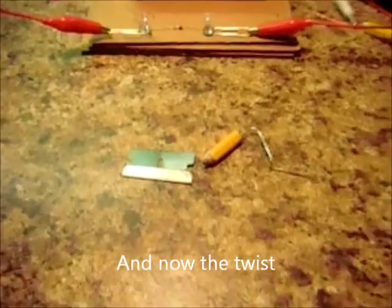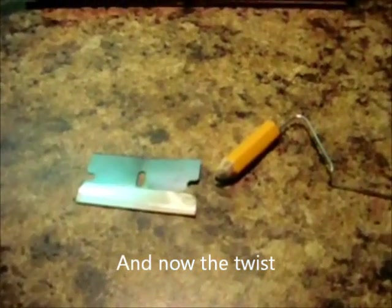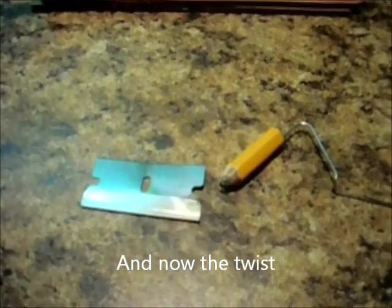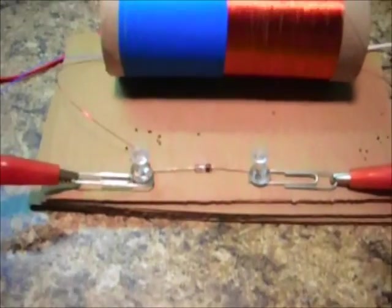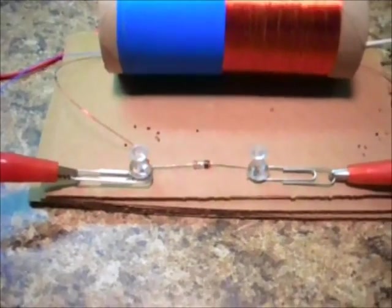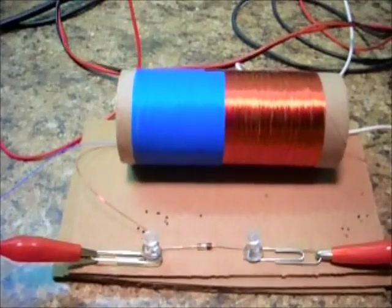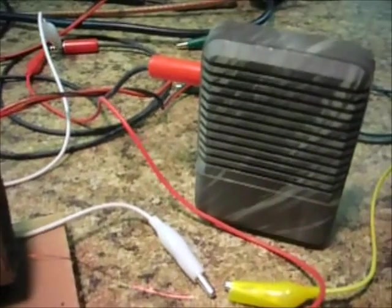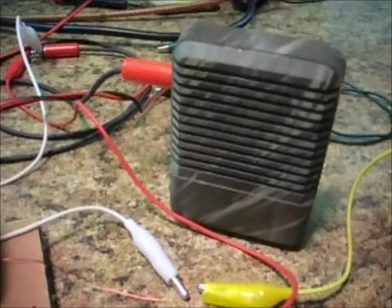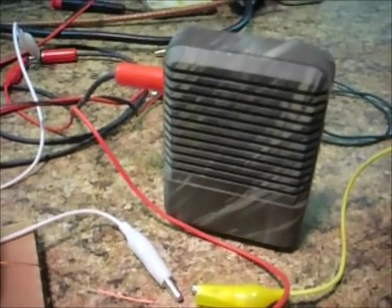What I've done now is I've removed the razor blade pencil cat whisker type detector and replaced it with a modern diode. That's a 1N34 detector diode. We put it across our coil in place of the cat whisker and razor blade. And now we have the Suns game on again.